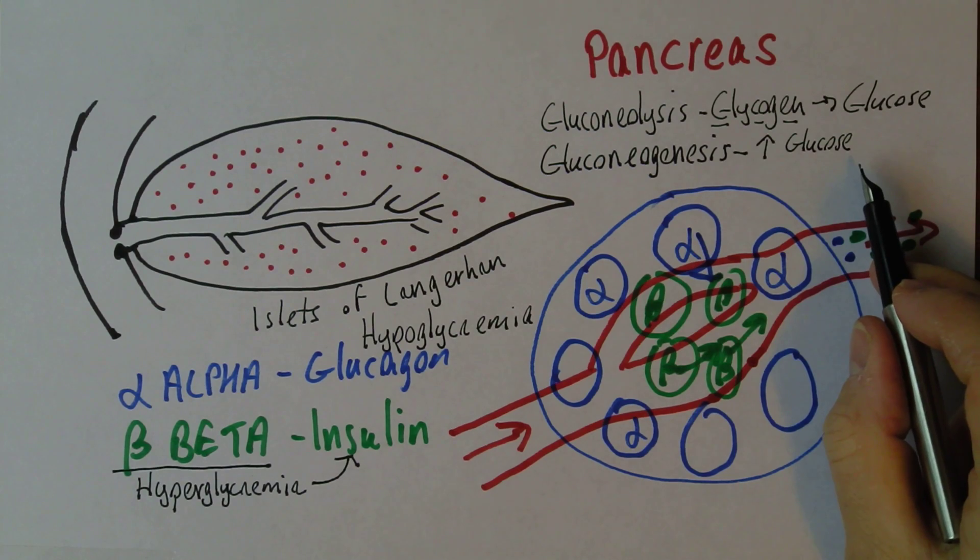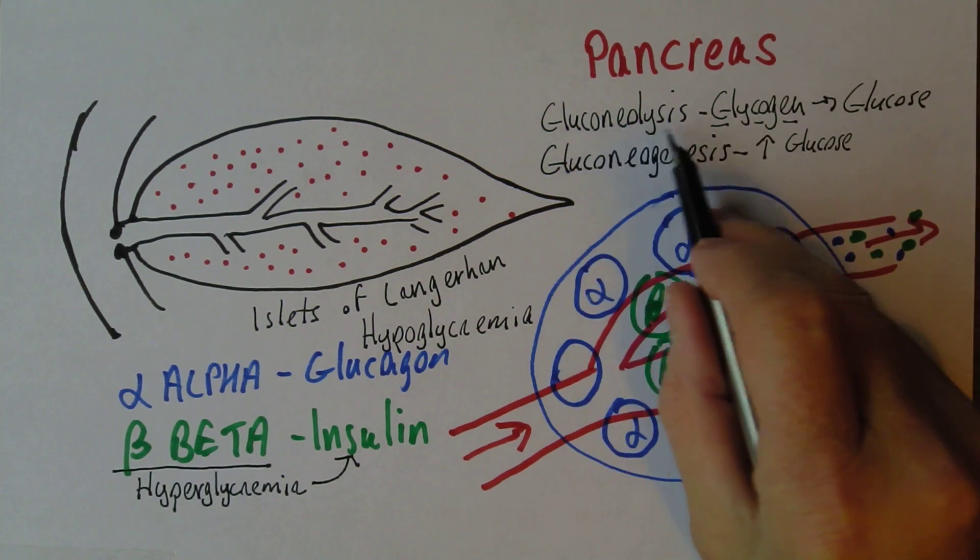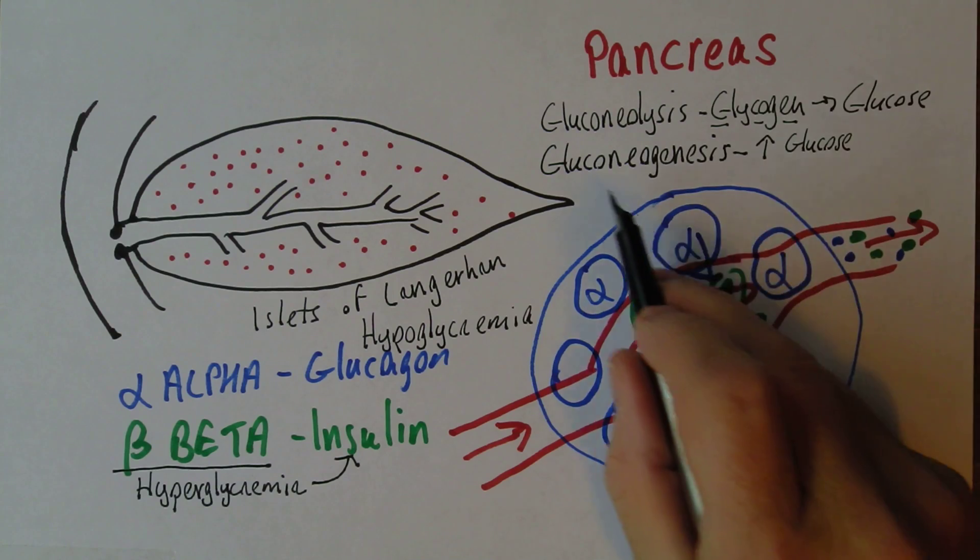Because we need a certain amount of glucose in the blood, of course, otherwise the brain's going to stop working. So the glucagon in the short term will raise blood sugar levels by glycogenolysis, in the longer term by gluconeogenesis.